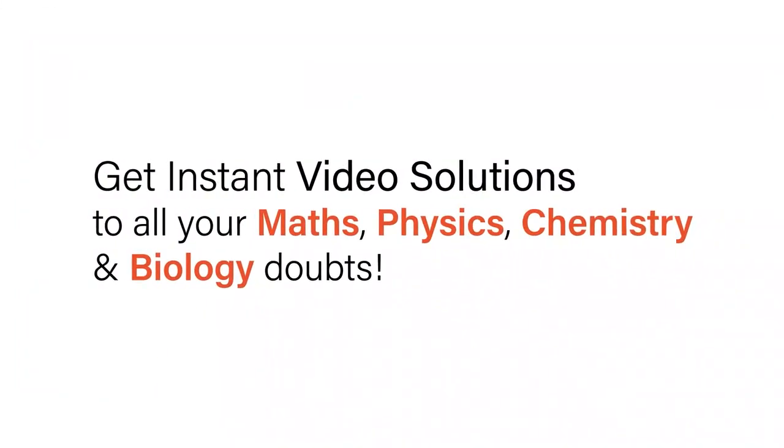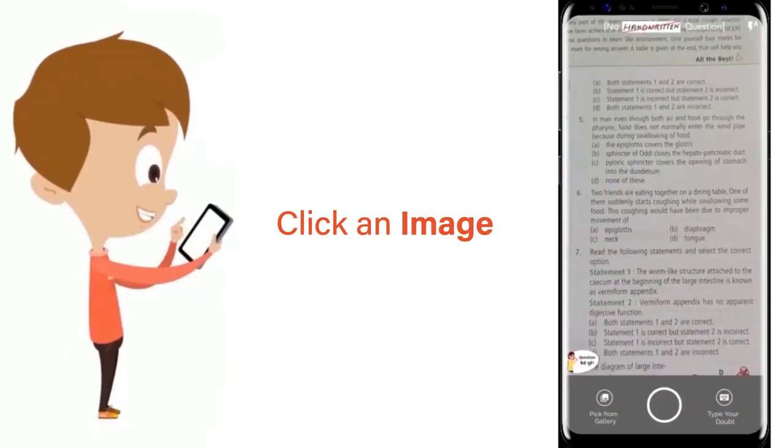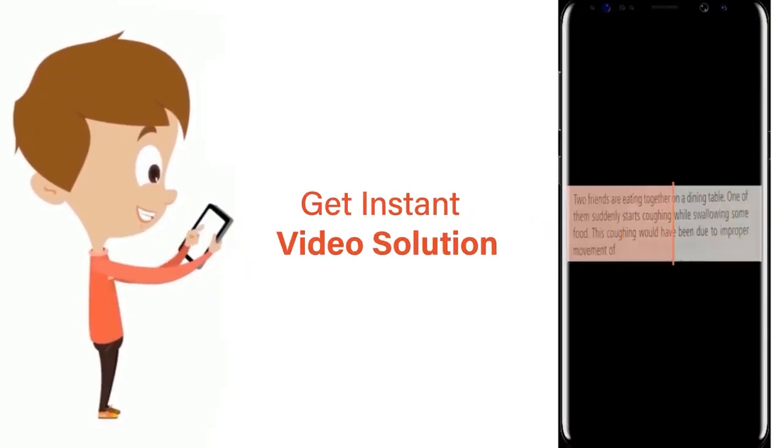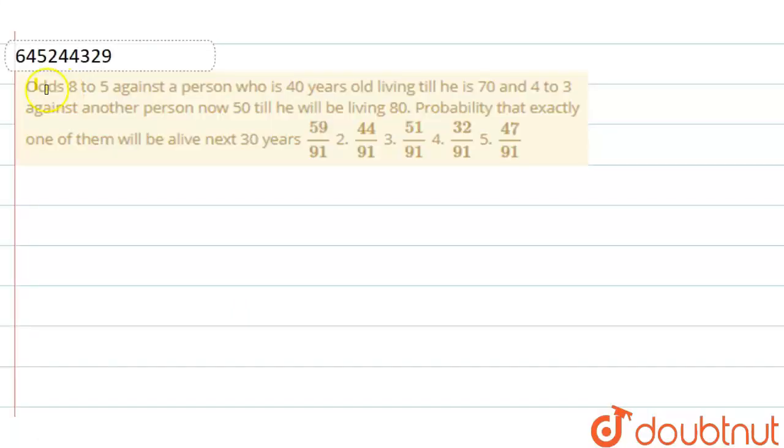With Doubtnet, get instant video solutions to all your maths, physics, chemistry, and biology doubts. Just click the image of the question, crop the question, and get instant video solution. Download Doubtnet app today. Hello friends, question is odds 8 to 5 against a person...